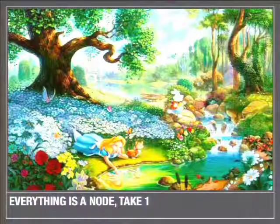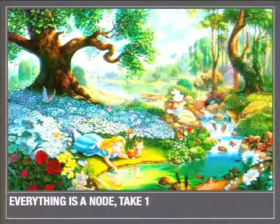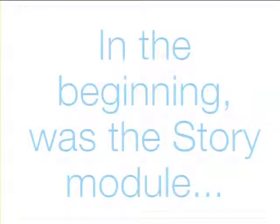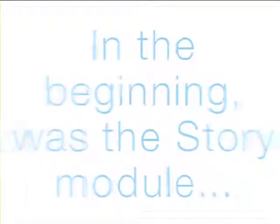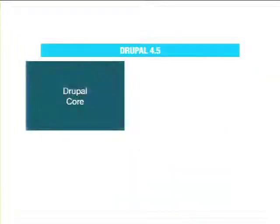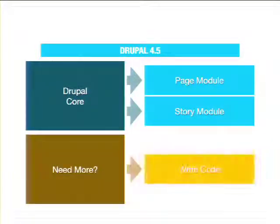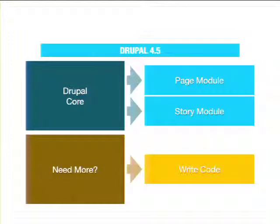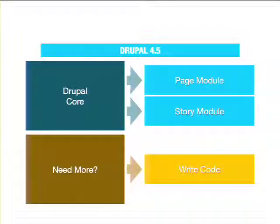If you've been around Drupal for any length of time, you've heard the everything-is-a-node mantra. In the very beginning, back in Drupal 4.5, we had in Core the page module and the story module — two modules that did very specific things. One created a page content type with a title and a text field, and the other created the story content type with a title and a text field. If you wanted other fields or content types, go write some code. The instructions were: take the story module, copy it, and change every place it says story to whatever name you want.